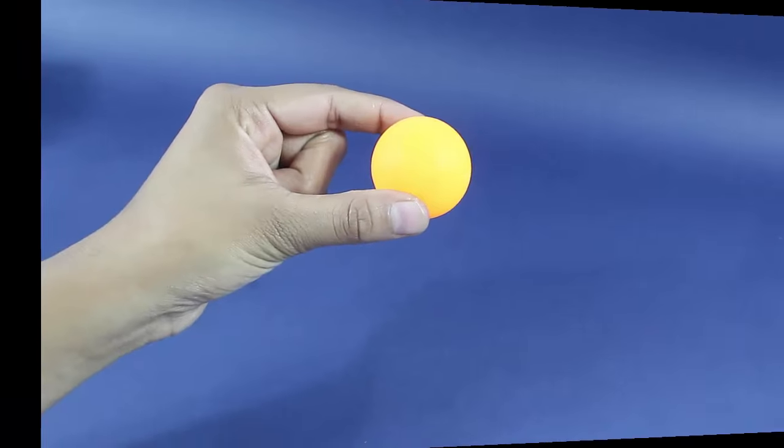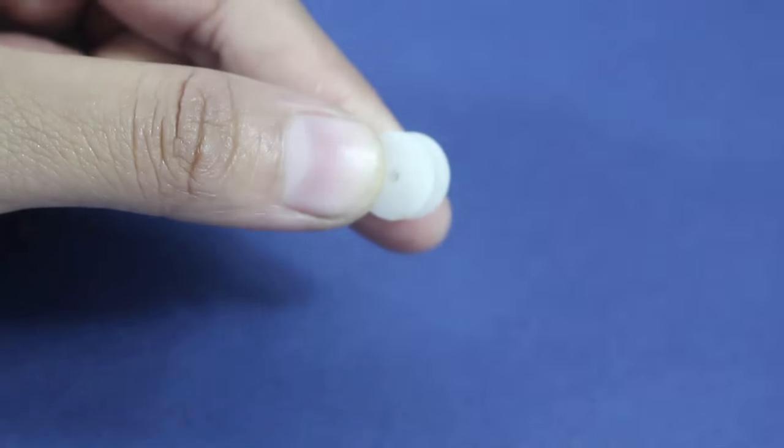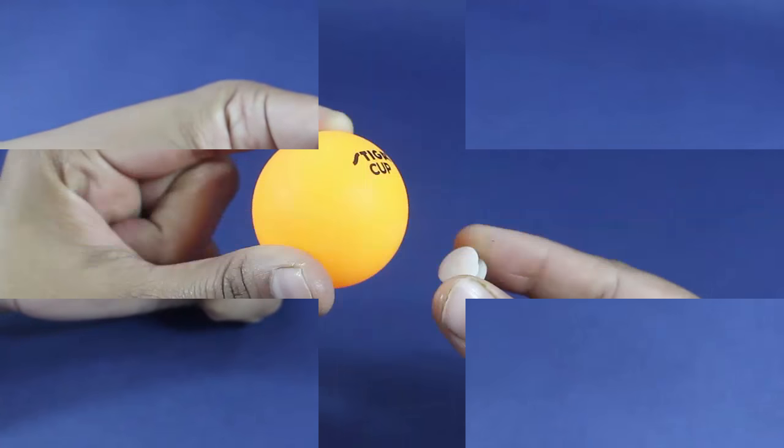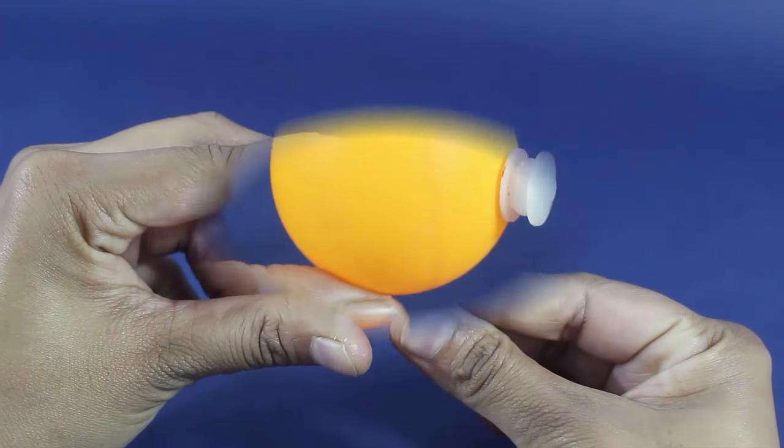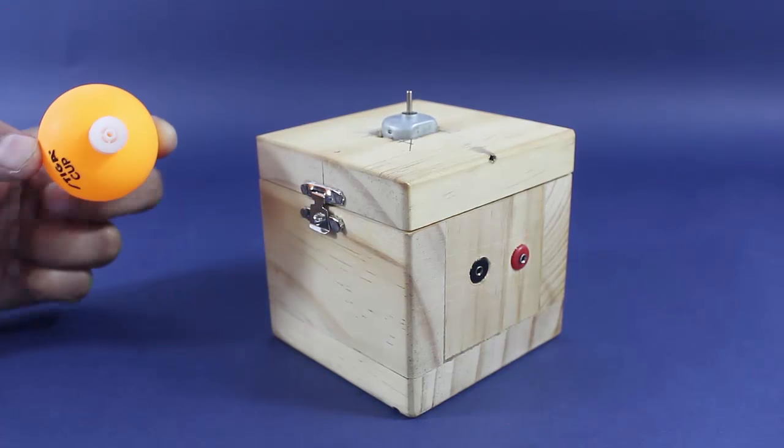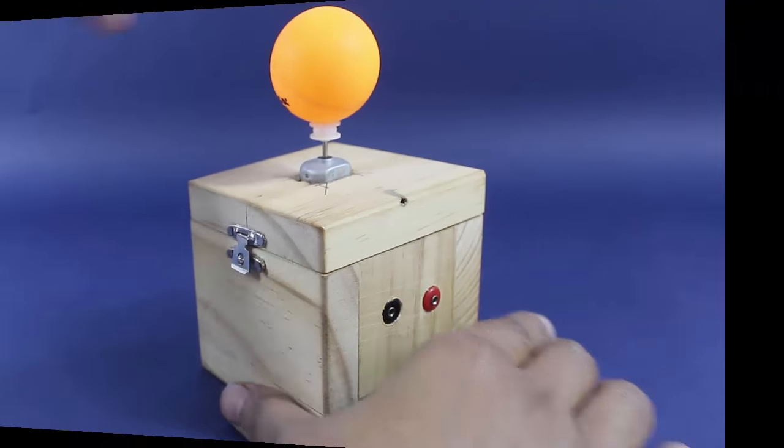Now take a ping pong ball and stick it to a plastic motor pulley with the help of strong glue. Let the pulley dry and then press the pulley on the motor shaft.